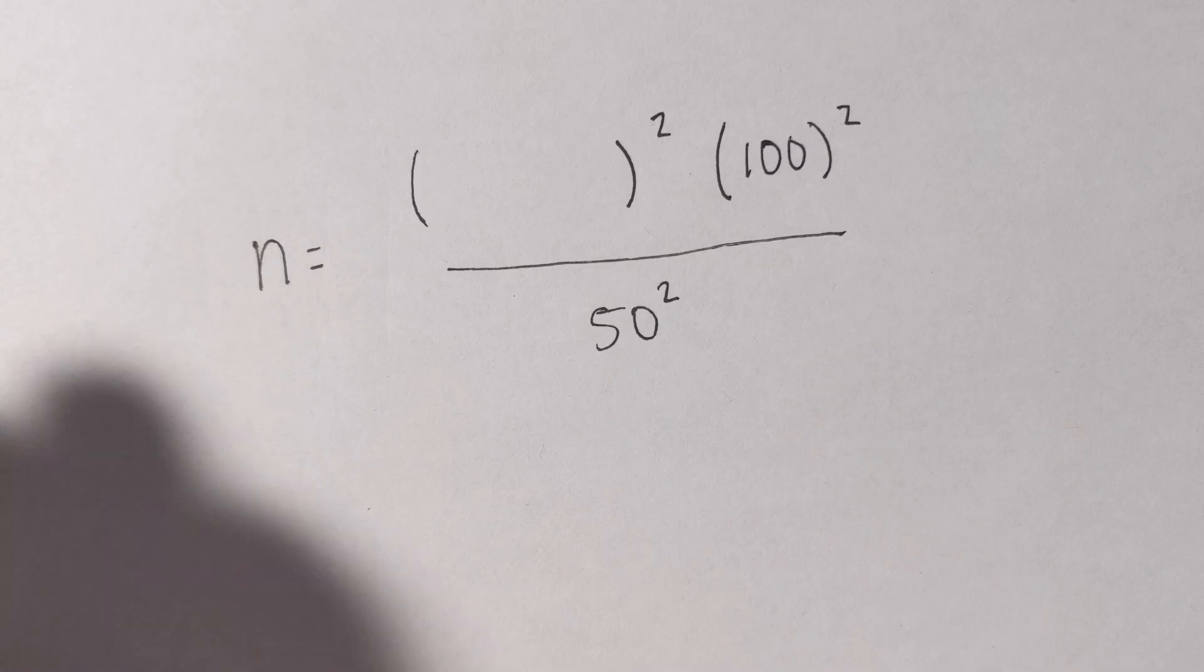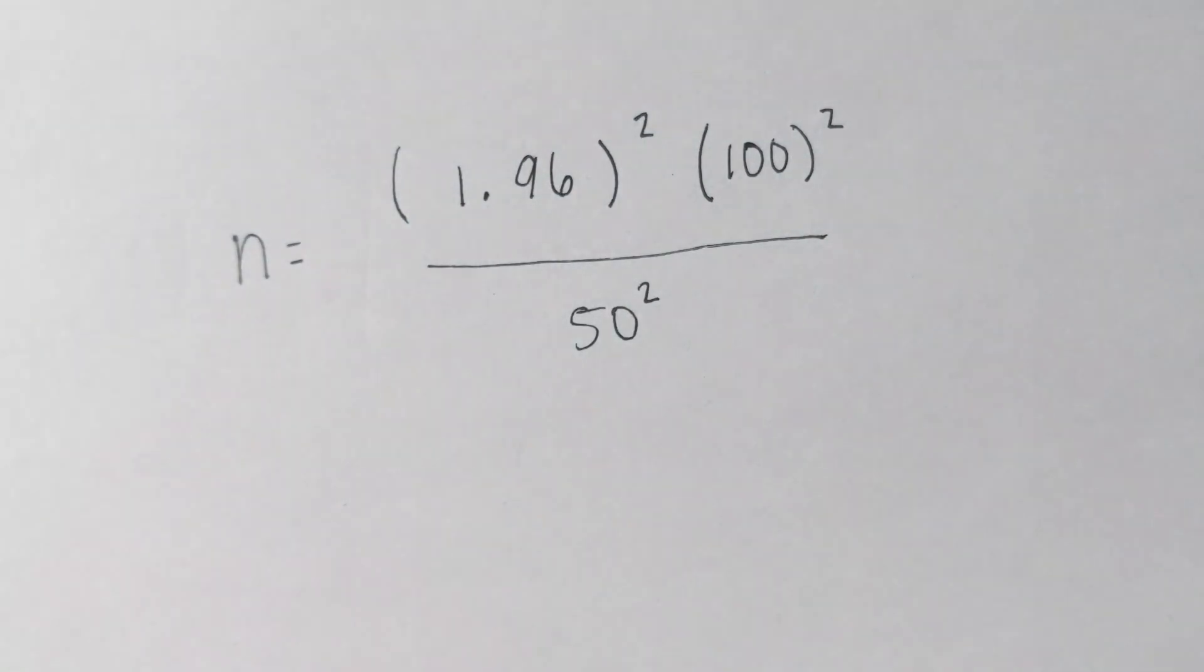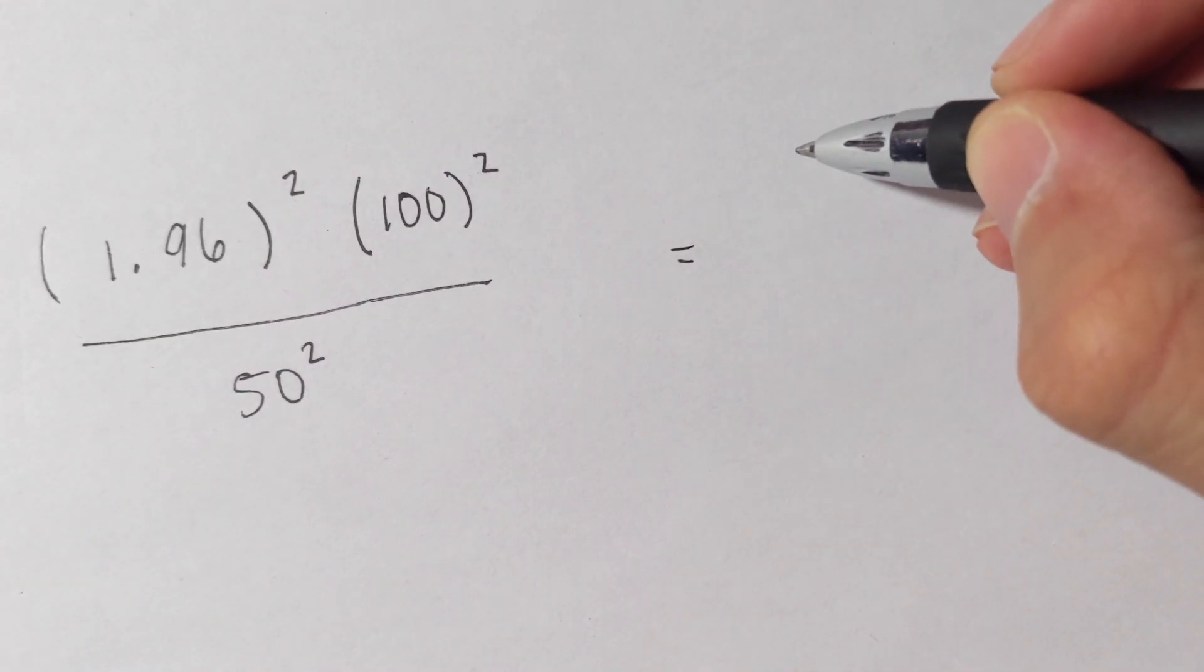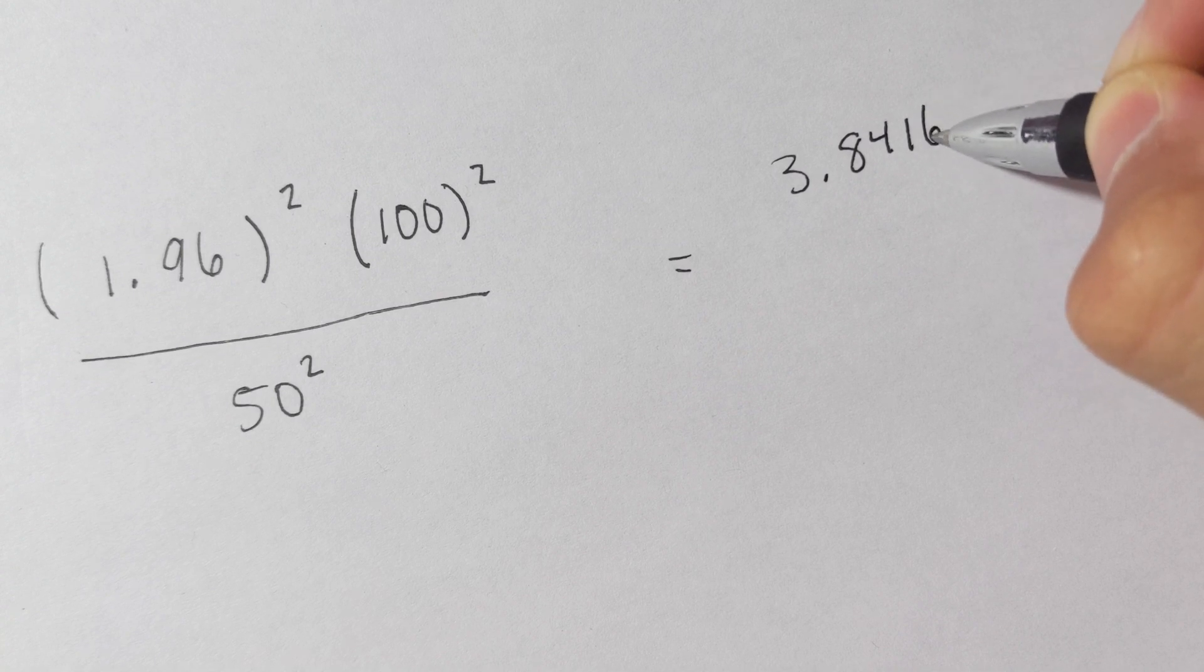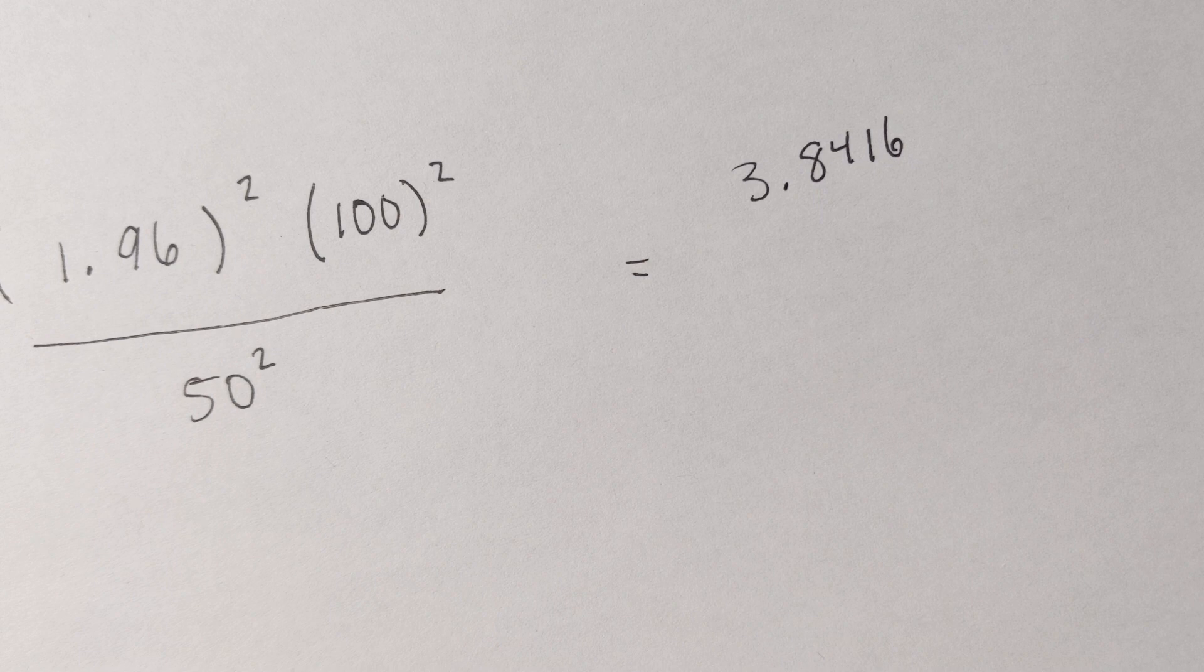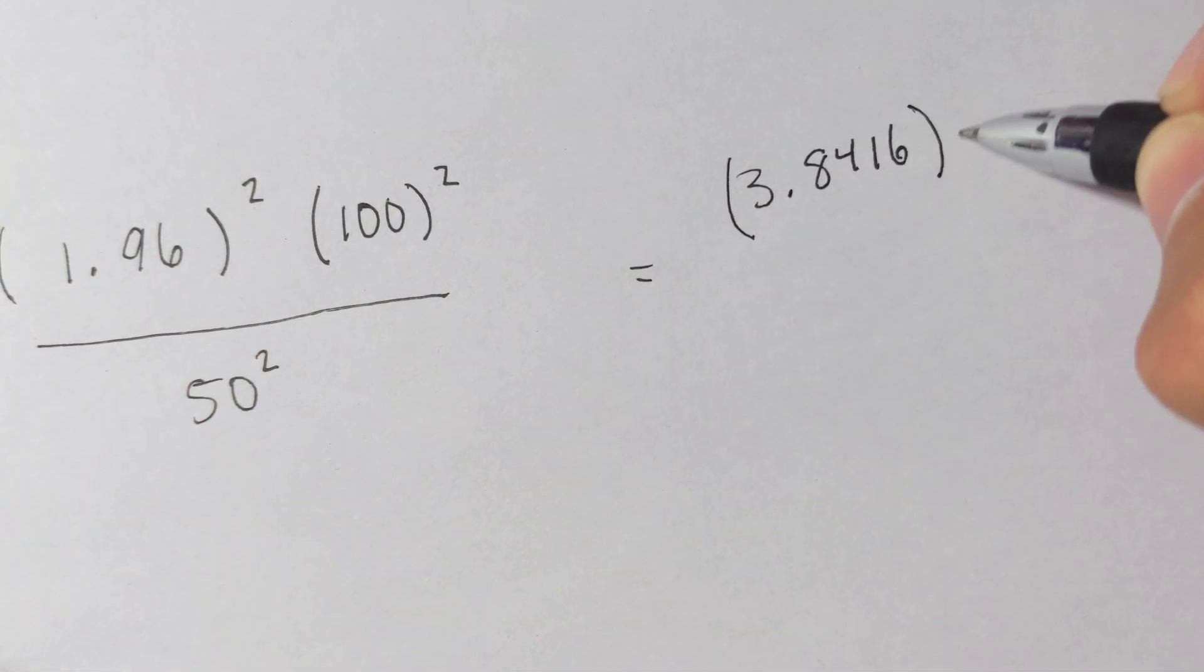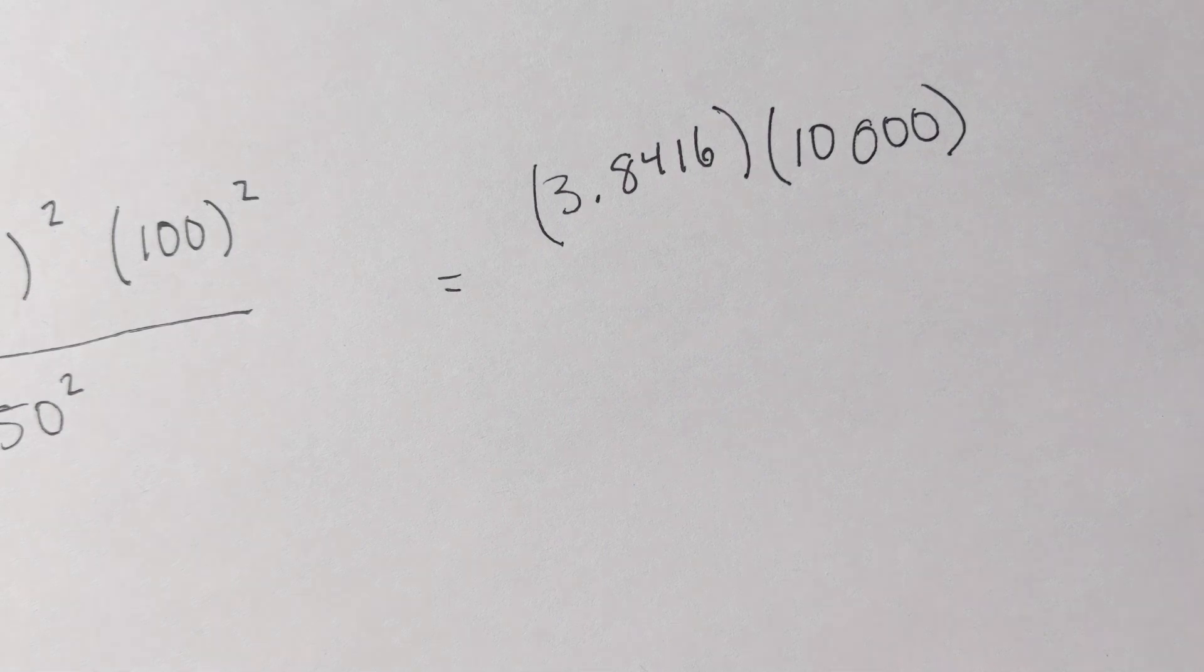So now we go back to our equation. We know that the z value that we need is 1.96. All right, now we just break out our calculator. So I know that 1.96 squared is 3.8416, and then 100 squared is 10,000. And then 50 squared is 2,500.